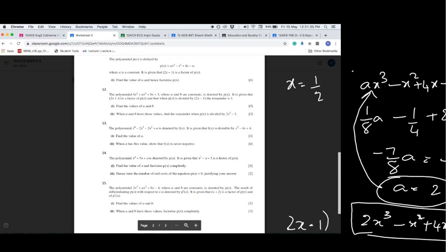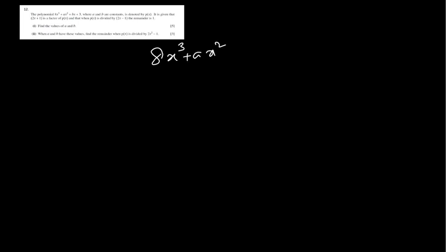So when 2x plus 1 divides p(x), you get remainder 0. When 2x minus 1 divides, you get remainder 1. This gives you simultaneous equations — that's the first part, worth 5 marks. The polynomial is 8x cubed plus ax squared plus bx plus 3, so this is f(x).